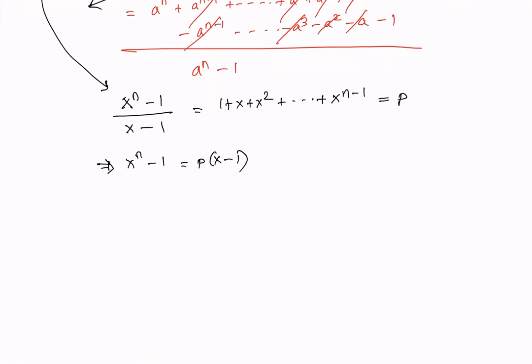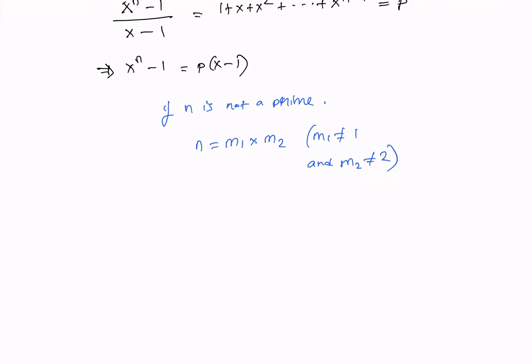We want to show that n is a prime number. Suppose it is not. If n is not prime, then we should be able to factorize it as m₁ × m₂, where m₁ ≠ 1 and m₂ ≠ 1. That is the meaning of not being prime.